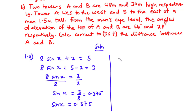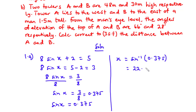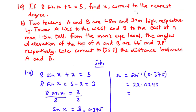To find x, we take the inverse sine: x equals sine inverse of 0.375, which is equal to 22.0243 degrees. We are asked to leave our answer correct to the nearest degree, therefore x is equal to 22 degrees. Now let's focus on part b.